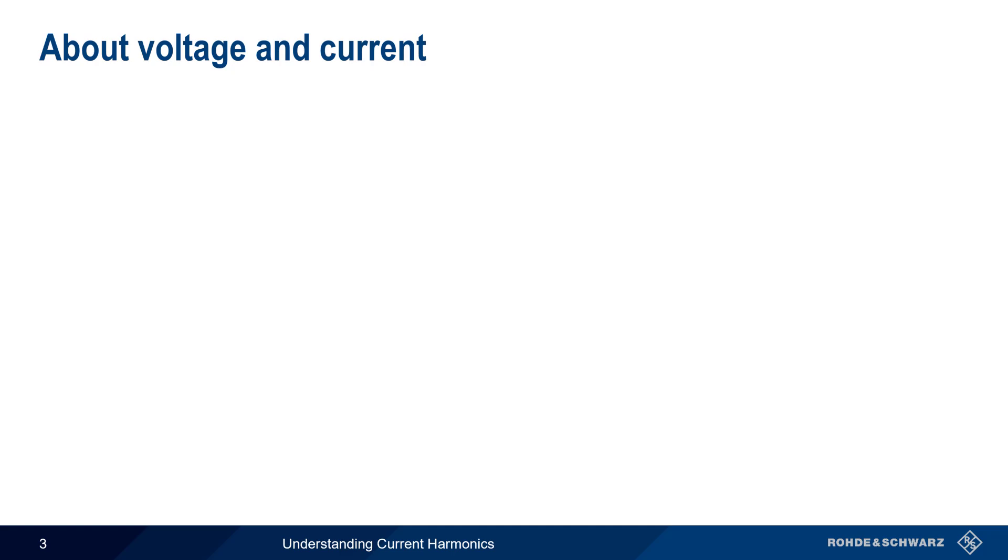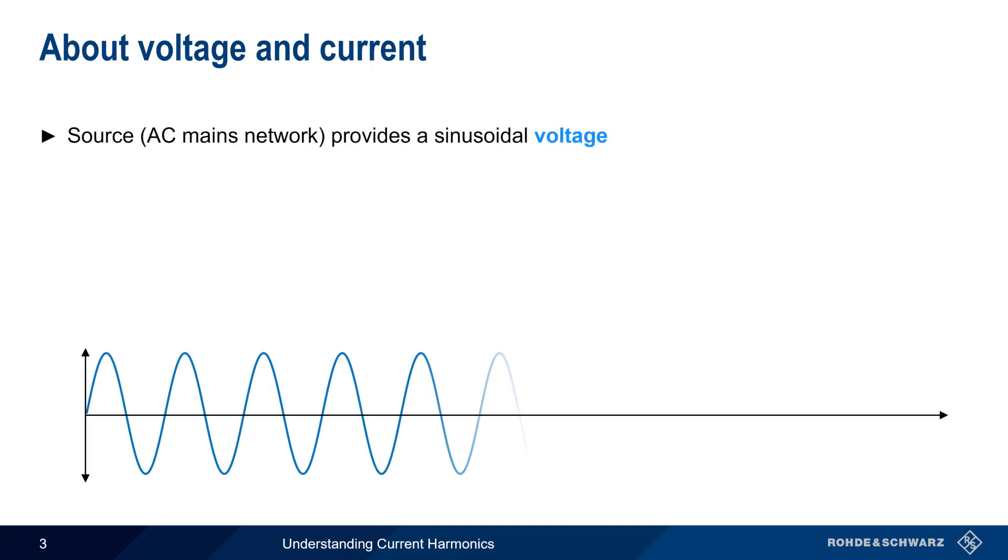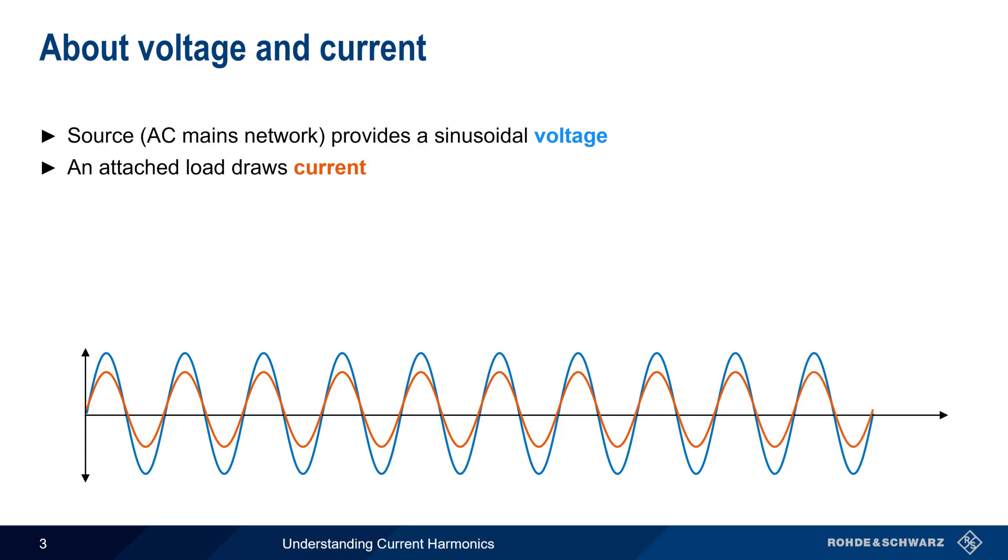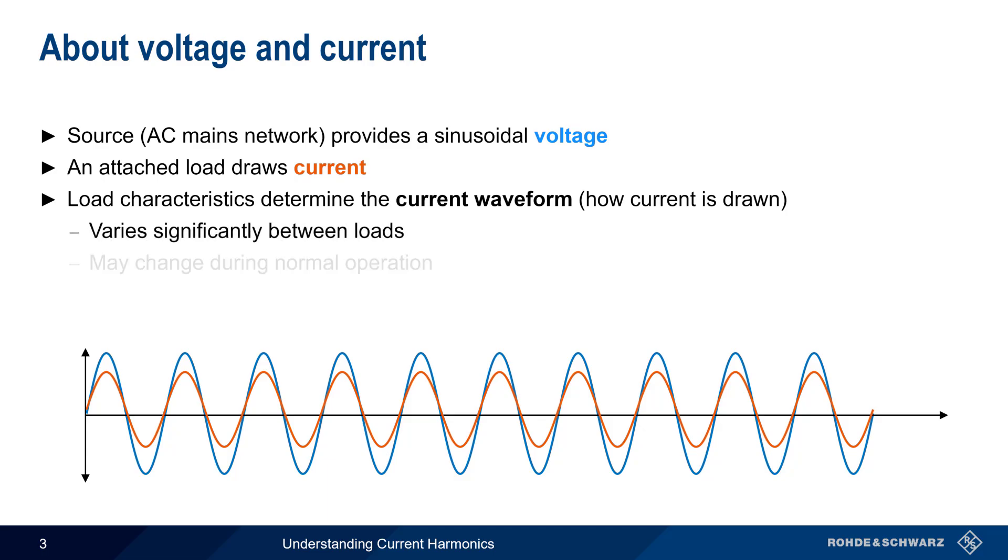In the AC mains network, voltage is provided in the form of a sinusoidal waveform, normally either at 50 or 60 Hz depending on geography. Loads attached to this network draw current, and the way in which this current is drawn, that is the shape of the current waveform, is determined by the characteristics of the load. Different loads draw current in different ways, and a load may change the way it draws current during normal operation.